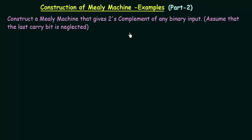In this lecture we will be seeing another example of construction of a Mealy machine. Our task is to construct a Mealy machine that gives the 2's complement of any binary input. We assume that the last carry bit is neglected.